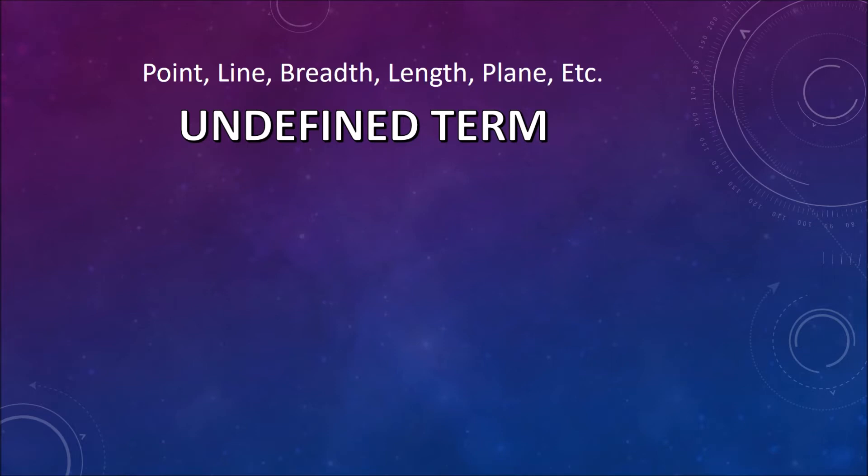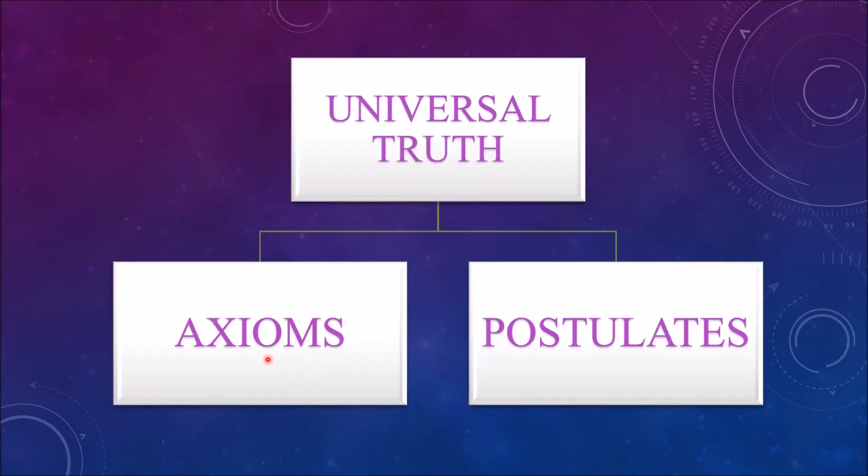Starting with these definitions, Euclid assumed certain properties which were not to be proved. These assumptions are actually obvious universal truths. He divided them into two types: axioms and postulates. He used the term postulate for assumptions